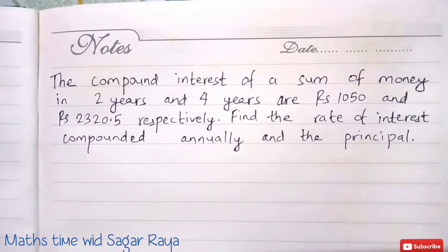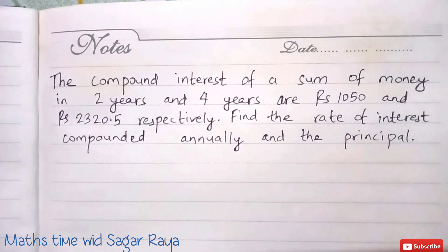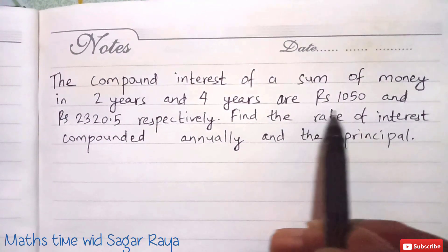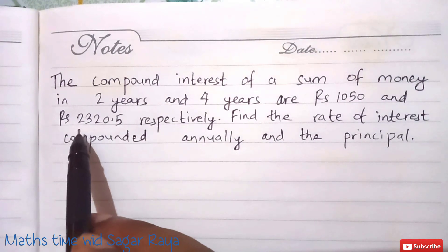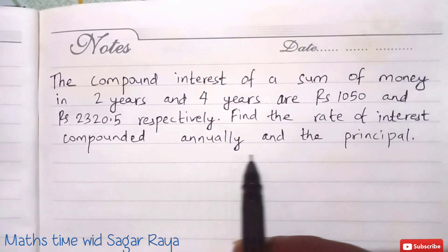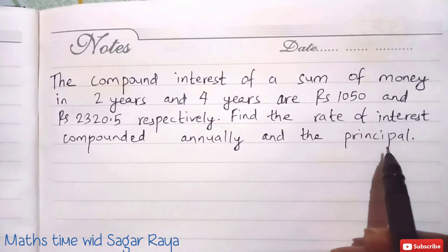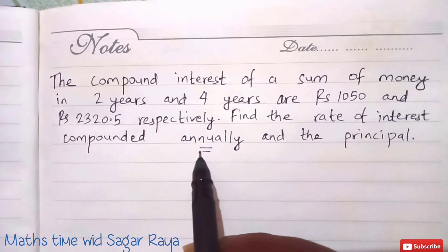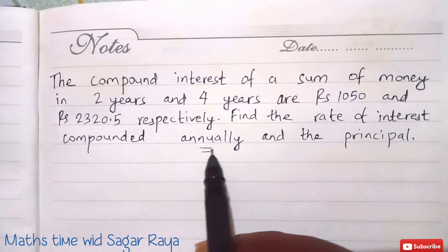Now without any delay, let's move to our question. You can see the question on screen: the compound interest of a sum of money in two years and four years are rupees 1050 and rupees 2320.5 respectively. We need to find the rate of interest compounded annually and the principal. The word 'annually' means we use the compound interest formula for the annual case.